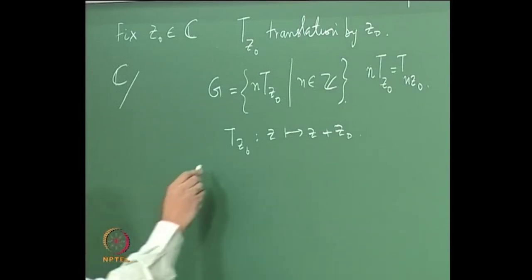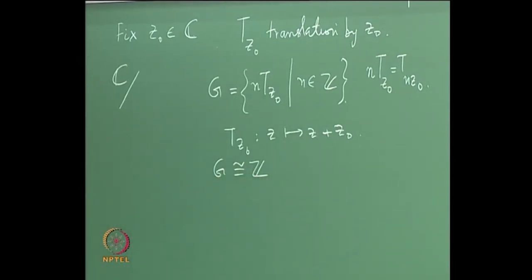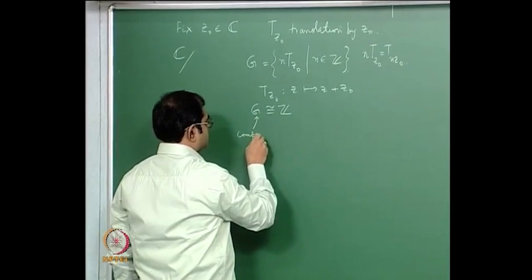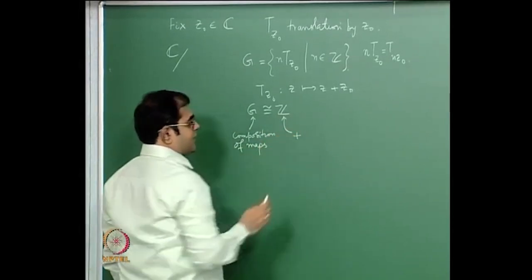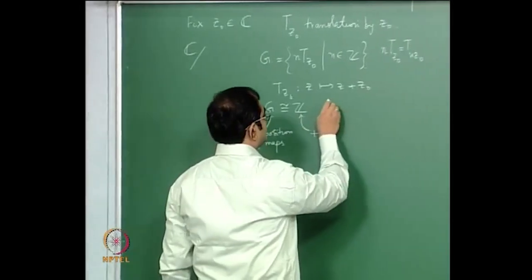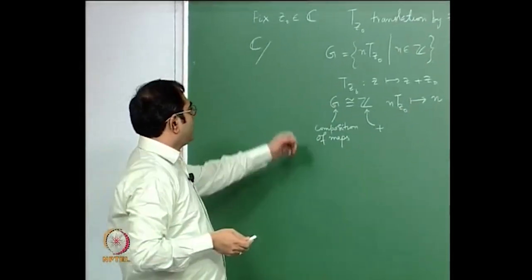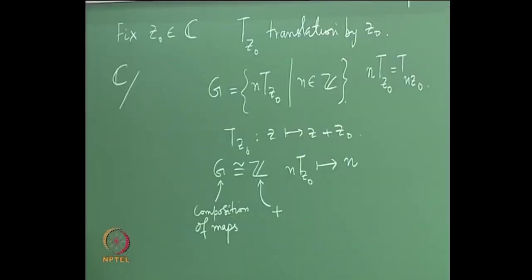This group G is isomorphic to the integers, where the group operation on the left is composition of mappings and on the right is the usual addition. The isomorphism is gotten by simply sending n·T_{z0} to the integer n. Going modulo this group of translations by integer multiples of z0 gives you the cylinder.